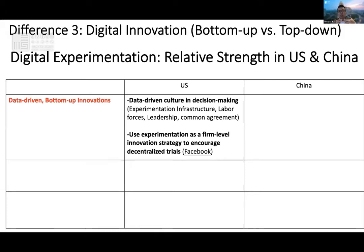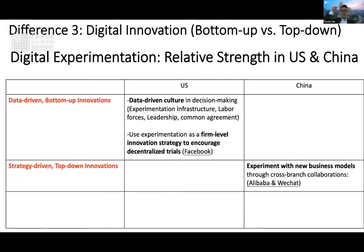Let me use my own research in the area of digital experimentation as an example. While I was working at Facebook, I was amazed and fascinated by the data-driven culture and the decentralized bottom-up innovations in the company. There are tens of thousands of experiments every year by frontline employees to experiment with different product features, algorithms, and so on. For instance, some of the most important innovations at Facebook — like Newsfeed — were not designed by Mark Zuckerberg, but actually discovered by frontline engineers and product managers. Whereas in China, you see more strategy-driven top-down innovations, as with WeChat and Taobao — they have a lot of very interesting business model innovation and business model experimentation, empowered by data and also top-down design.